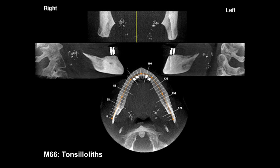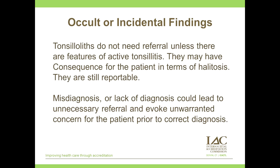Another patient, a male, age 66, seen for planning implant placement in the anterior mandible. The coronal slab and views of the tonsillar areas show floccular calcifications clearly seen to be anterior to the oropharynx — these are tonsilloliths. Tonsilloliths do not need referral unless there are features of active tonsillitis, though they may have consequences for the patient in terms of halitosis. They are still reportable. Misdiagnosis or lack of diagnosis could lead to unnecessary referral and evoke unwarranted concern for the patient prior to correct diagnosis.